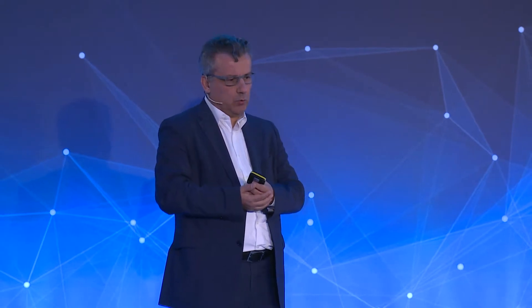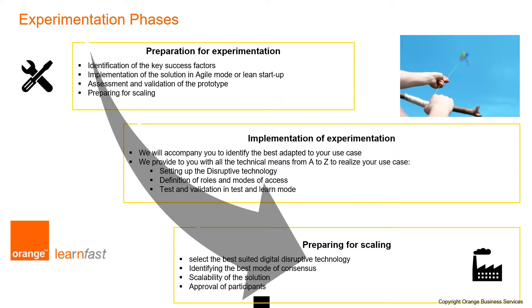After the use case is selected, we move to experimentation. Experimentation means we have already selected the use case and we start the implementation POC, then develop the smart contract. This is the methodology all companies use in order to enter the smart city and develop smart services using smart contracts and blockchain technologies.